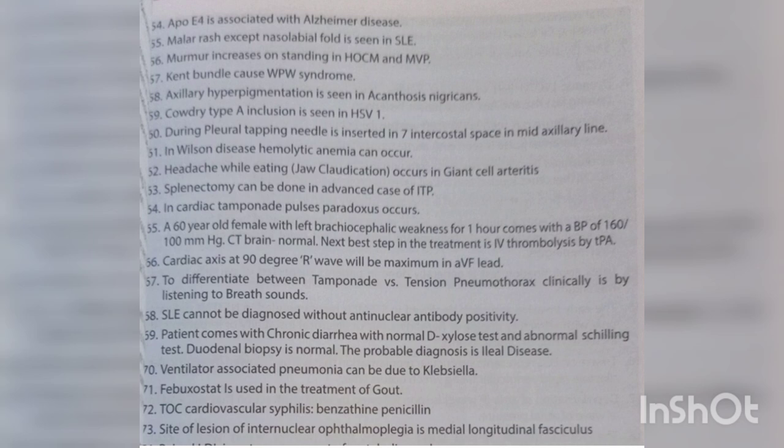A 60-year-old female with left brachiocephalic weakness for one hour presents with BP 160/100 mmHg and a normal CT brain. The next best step in treatment is IV thrombolysis by tPA. Cardiac axis at 90 degrees — the R wave will be maximum in aVF lead. To differentiate tamponade versus tension pneumothorax clinically is by listening to breath sounds.